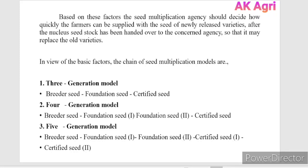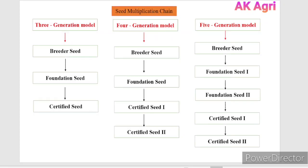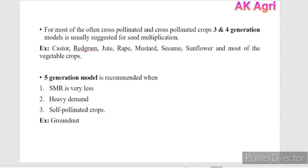These are the generation models for seed multiplication. Based on demand, seed multiplication ratio, and genetic deterioration, we decide which model to follow to quickly distribute quality seeds to farmers and replace old varieties with new varieties. In India, we are following the three generation model. For most often cross-pollinated crops, three and four generation models are usually suggested for seed multiplication.